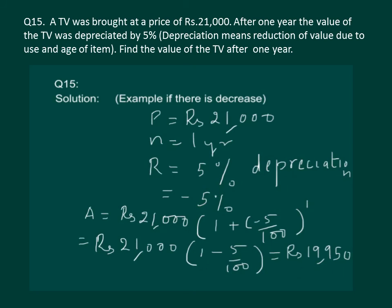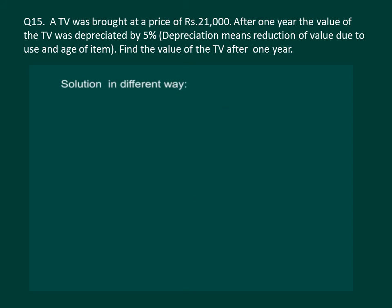There is another way of solving question number 15 according to which the principal was rupees 21,000, that was the cost of the TV. Then there was a reduction of 5% per annum, and we had to calculate what will be the cost after one year, so n is 1. So let us find out using the formula of simple interest...